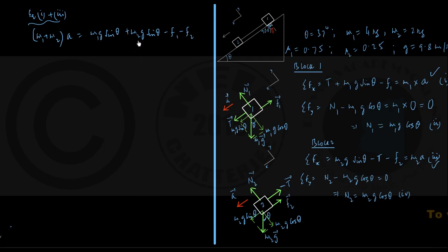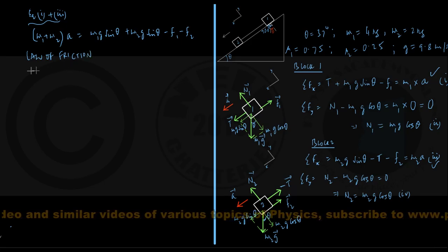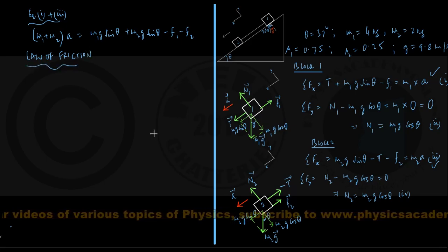It is time now to apply the law of friction and see from equations 2 and 4 what we might get. According to the law of friction, the frictional force is mu times the normal force.